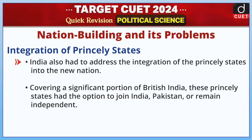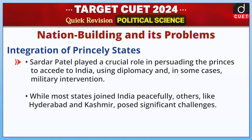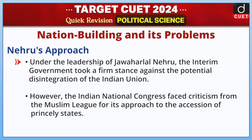India also had to address the integration of the princely states into the new nation. Covering a significant portion of British India, these princely states had the option to join India, Pakistan, or remain independent. Sardar Patel played a crucial role in persuading the princes to accede to India using diplomacy and in some cases military intervention. While most states joined India peacefully, others like Hyderabad and Kashmir posed significant challenges. Under the leadership of Jawaharlal Nehru, the interim government took a firm stance against the potential disintegration of the Indian Union. However, the Indian National Congress faced criticism from the Muslim League for its approach to the accession of princely states.